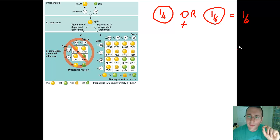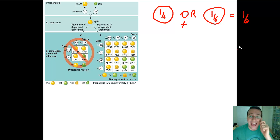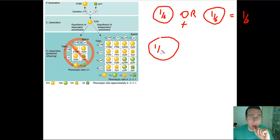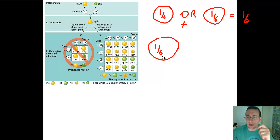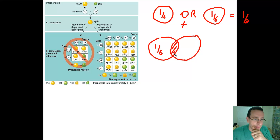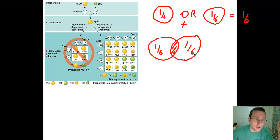Whenever you have events that cannot happen at the same time — whenever you hear the word OR — you're going to be adding the chances of those events. What about getting a 1 the first time you throw the die, and then getting a 2 the second time? The chance of the first event is definitely 1 out of 6. Can the second event happen at the same time the first event happened? Yes — it's possible to get a 1 the first time and a 2 the second time, which means these events can coexist.